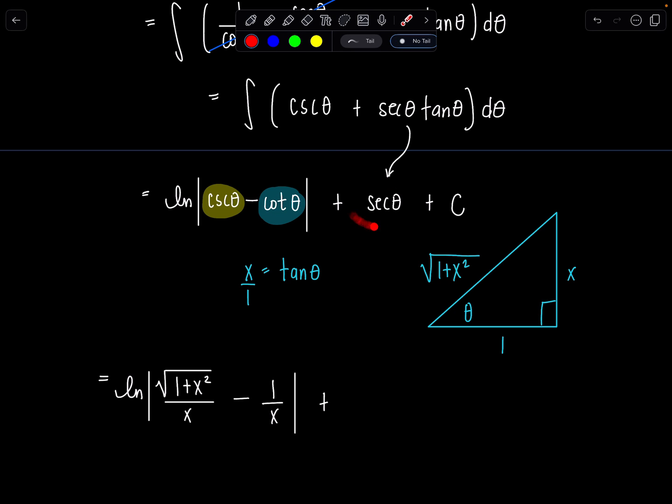Plus secant theta, reciprocal of cosine theta. That's going to be hypotenuse over adjacent. Rad 1 plus x squared over 1. You don't have to put the over 1. I'll ditch it in a second.